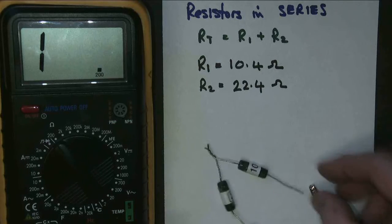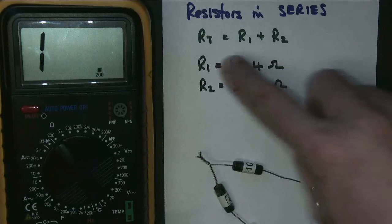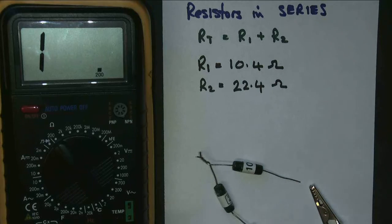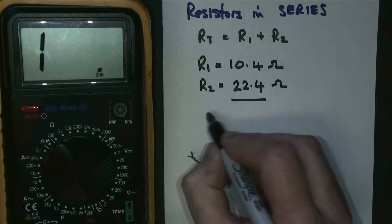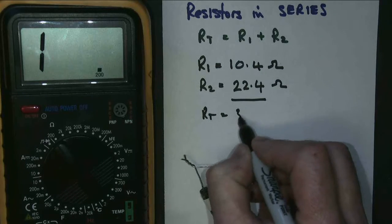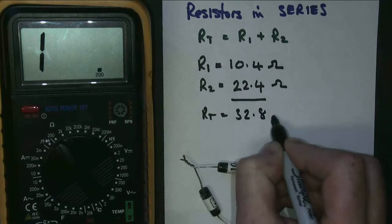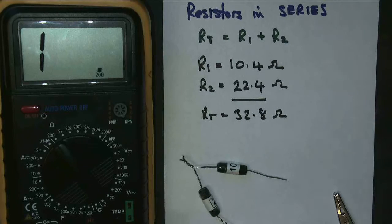So what should we get? Well, our theory says that RT is R1 plus R2, so we should find that RT should be 32.8 ohms. Let's see if it is.